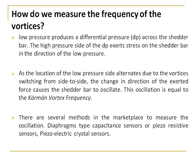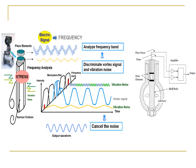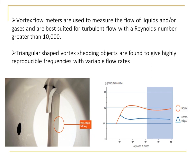The commonly used methods for measuring vortex frequency are capacitive type sensors, piezoresistive type sensors, or piezoelectric crystal sensors. In a typical arrangement, one sensor is placed near the bluff body and one somewhat further away. Using two piezoelectric sensors also helps cancel out noise, giving a clear and correct measurement of the vortex frequency.